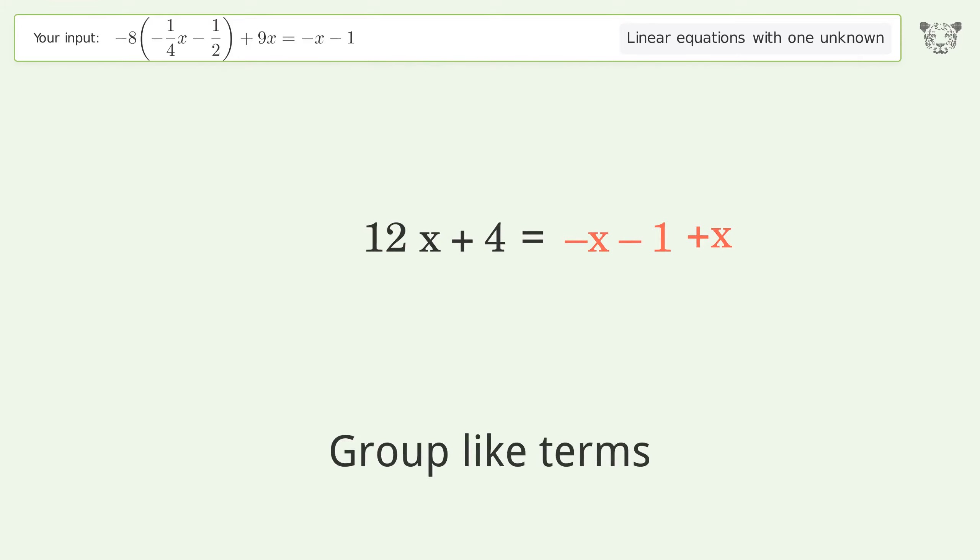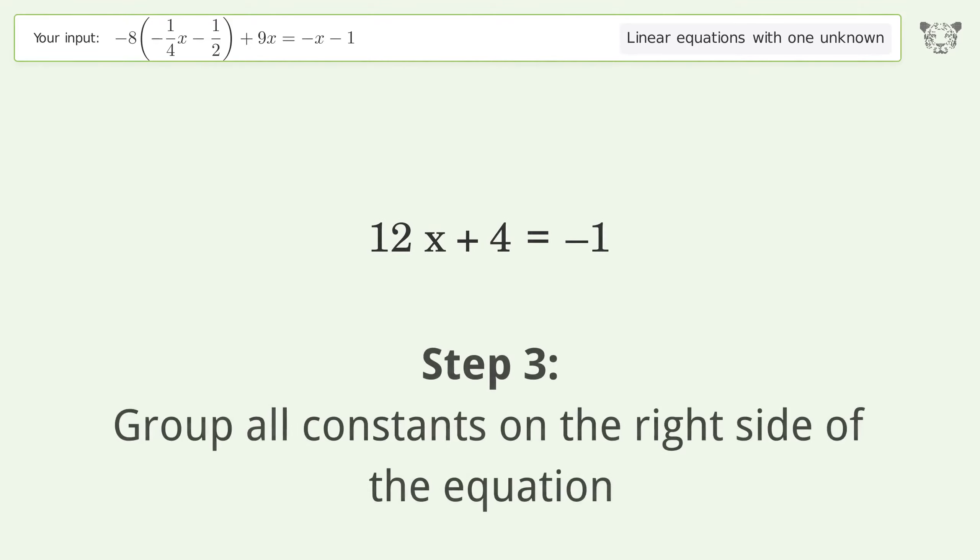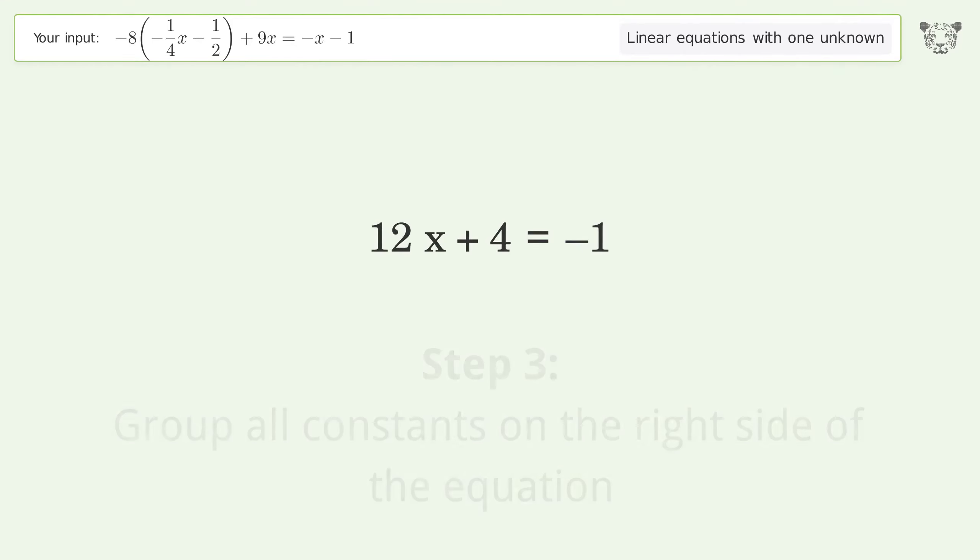Group like terms. Simplify the arithmetic. Group all constants on the right side of the equation. Subtract 4 from both sides. Simplify the arithmetic.